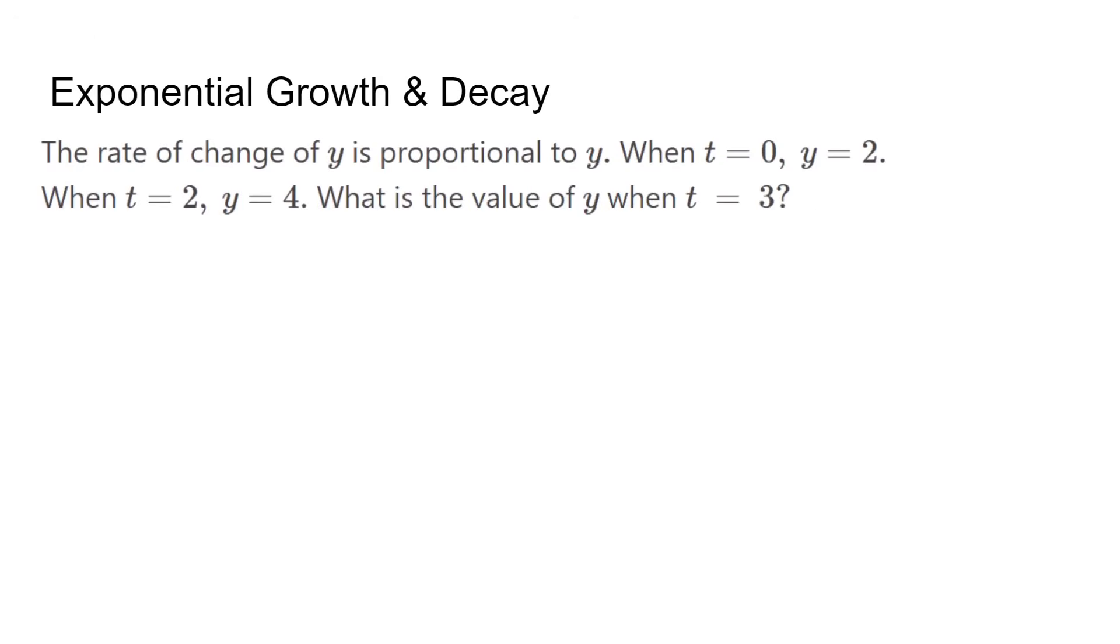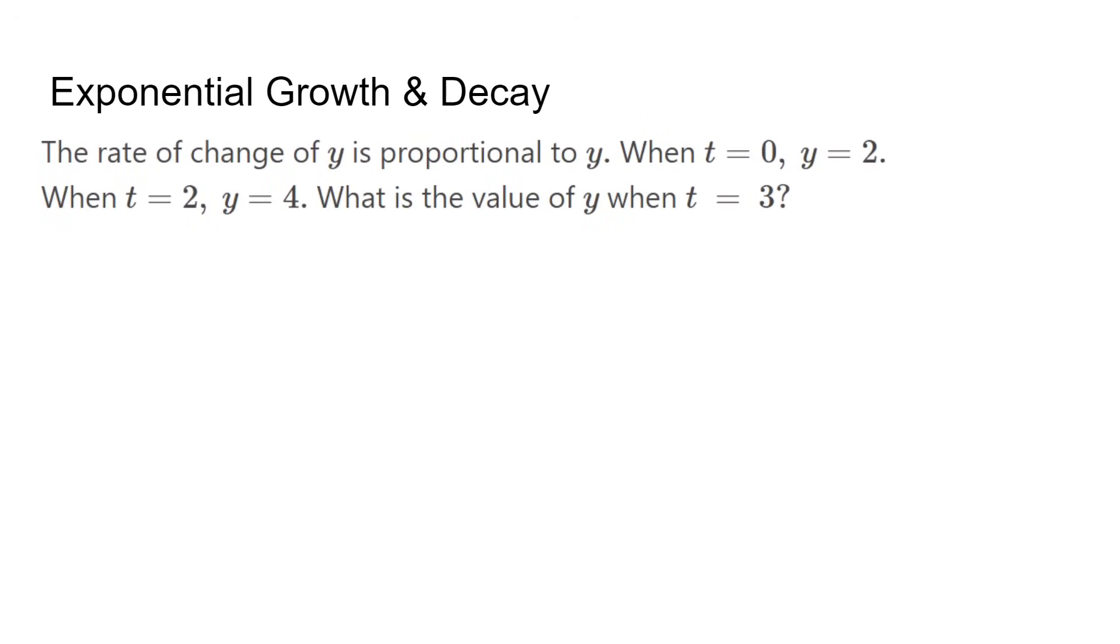The last topic is exponential growth and decay, which is a function to model things such as population. It's given by dy over dt equals ky, where k is a constant, and y equals ce to the power of kt.